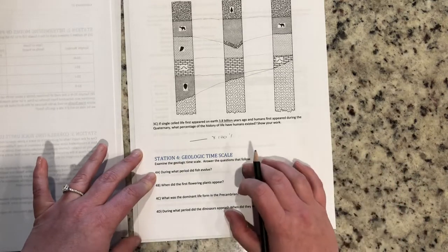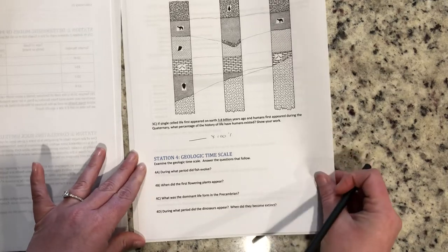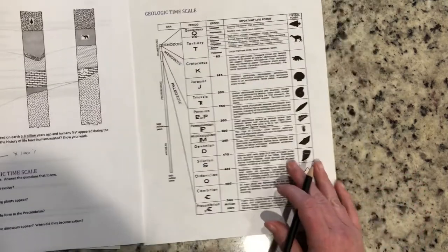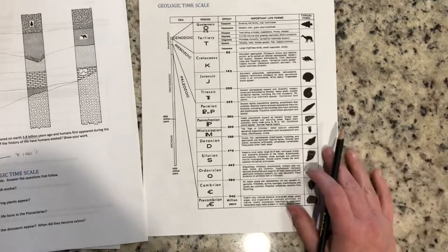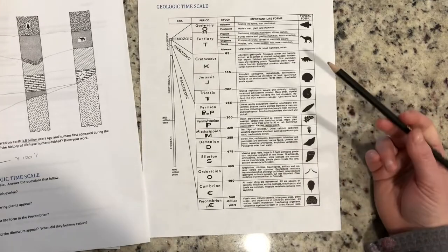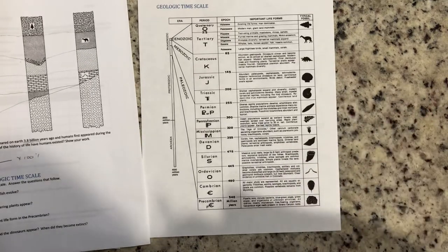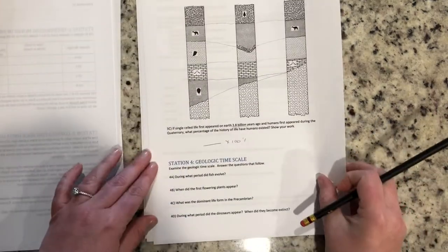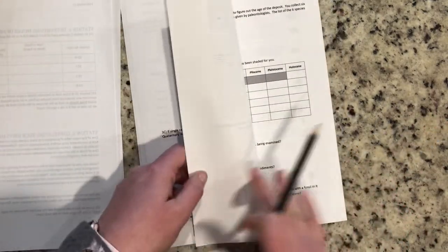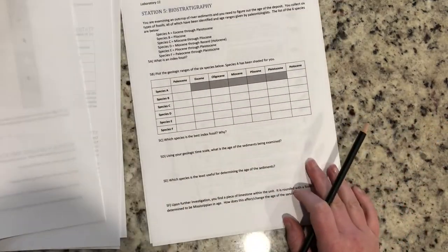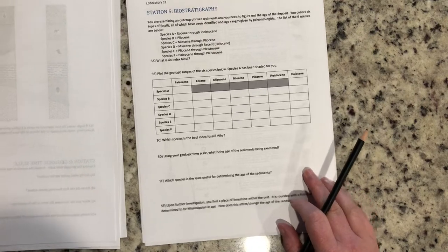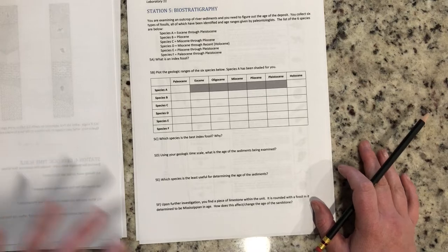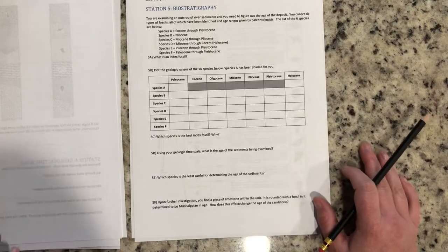Station four is looking at the geologic time scale. You're going to use the time scale on the last page to answer some basic questions — just looking through when things showed up: when we had flowering plants, when fish evolved, things like that — just to get you acquainted with the geologic time scale.